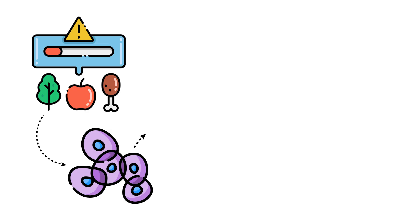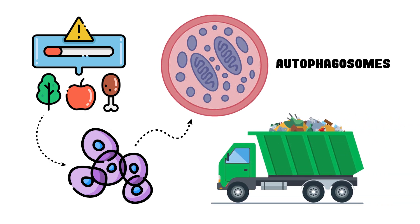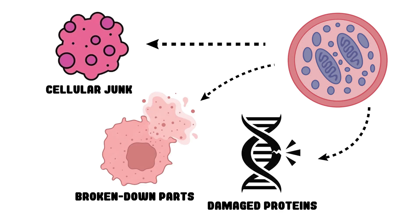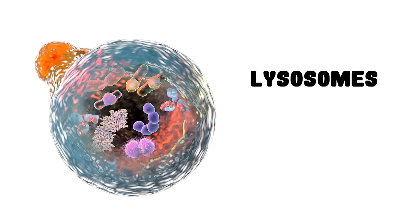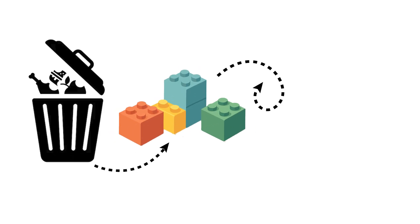When nutrients get scarce, your cells form small membrane sacs called autophagosomes that act like internal garbage trucks. They swallow up damaged proteins, broken-down parts, and cellular junk, then deliver them to lysosomes, compartments filled with enzymes that break everything down into reusable parts. What was once waste becomes raw material for building new cells.